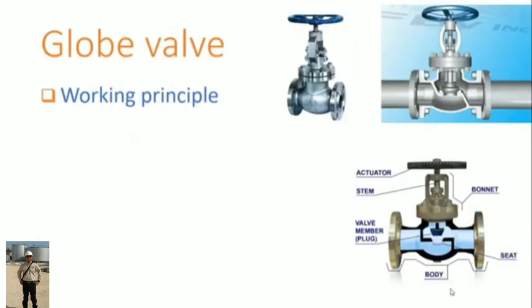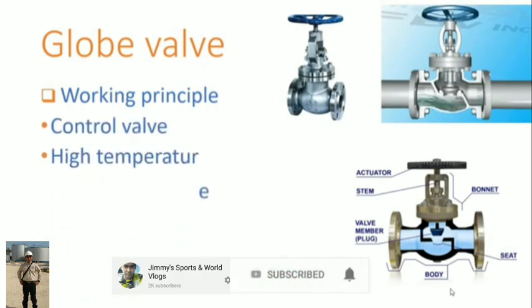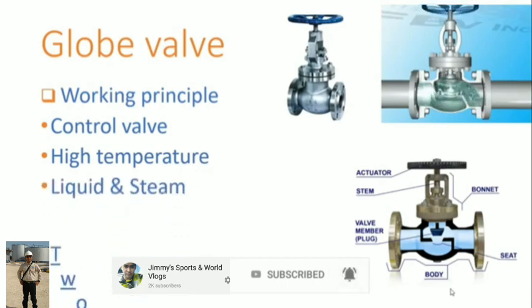Globe valve working principles. Its stem is connected to a plug or disc which is moved perpendicular to the seat. Globe valve is common for throttling purposes, controlling high temperature applications, but also can be used as shut-off valve. It uses for both liquids and gases.